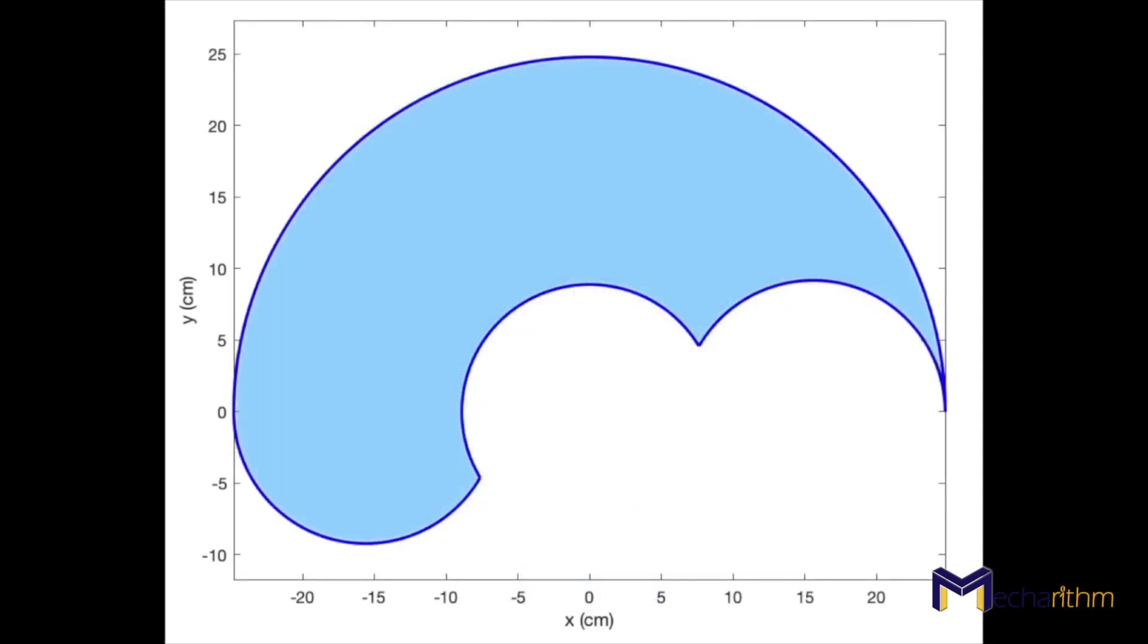If we put constraints on the joint angles, for instance, if theta 1 changes between 0 and 180 degrees and theta 2 changes between 0 and 150 degrees, then the workspace of the 2R planar robot with limitations on the joint angles will be like the shaded area shown in this figure. The shaded area shows the space that the end effector of the robot can reach.